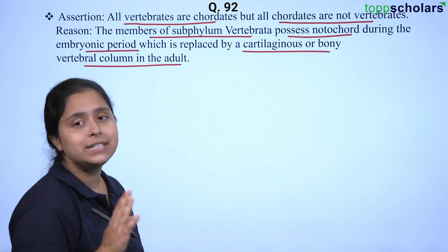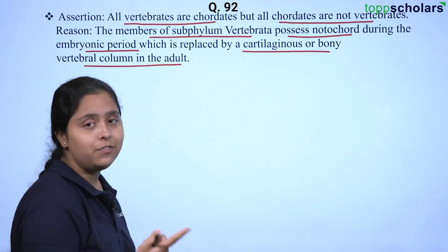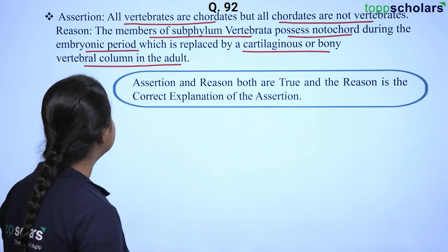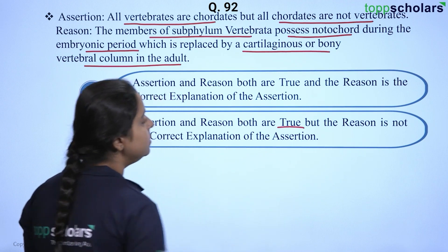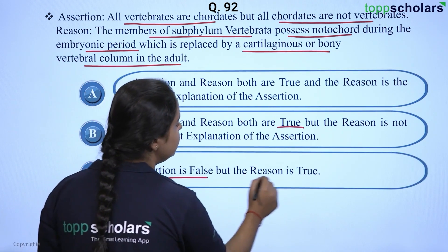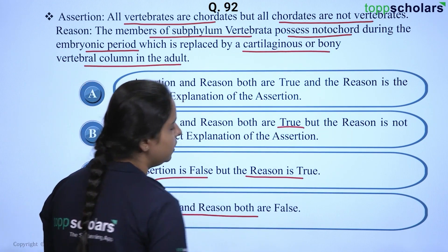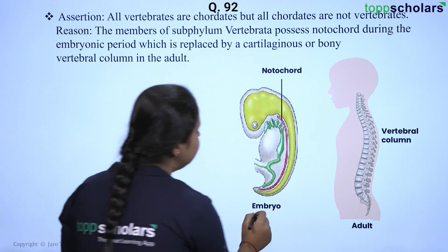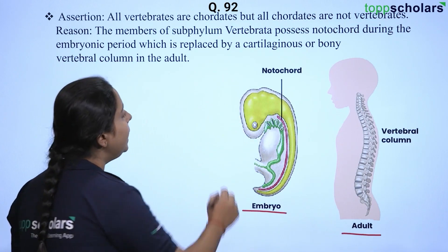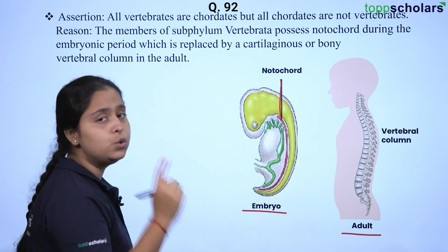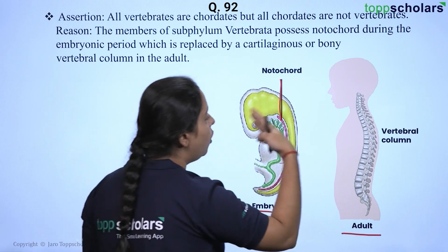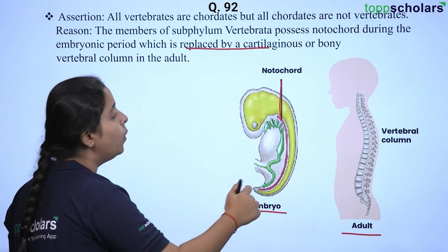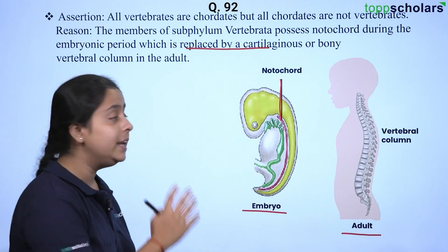Both the assertion and reason statements are true, and the reason also justifies the assertion. In the embryo stage there is the presence of notochord. As the organism develops, this notochord is then replaced by a cartilaginous or bony vertebral column, which is evident in the adult organism.